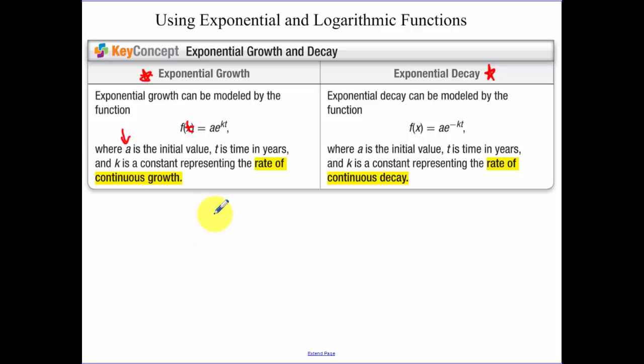Now remember, in the last section I talked about the amount you have in an account when things are growing continuously. So that looks very similar. You have your initial amount a or p, e, your r is the rate it's growing. Last section it was a percentage that I gave you. We're going to have to be finding k in this section and then t. So it's very similar to what we've already talked about.